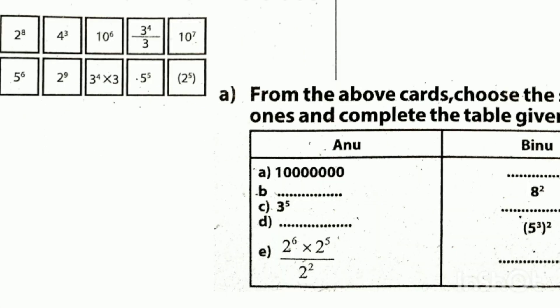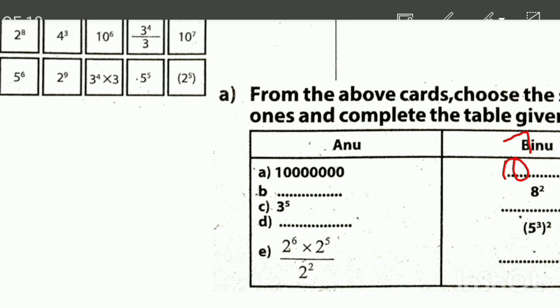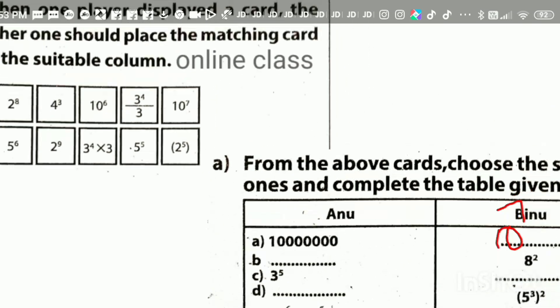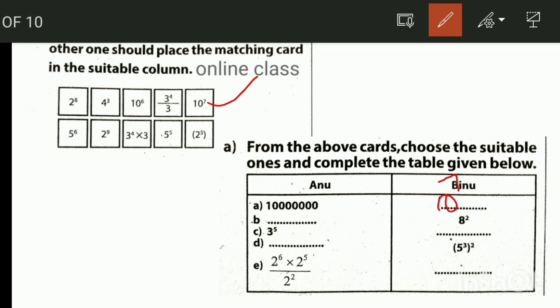One card has 7 zeros. What do we say? 10 raised to 7. This is 10 raised to 7. We add 8 square. 8 square is on the side. 8 square is equal to 4 cube. 4 cube is equal to 8 square.